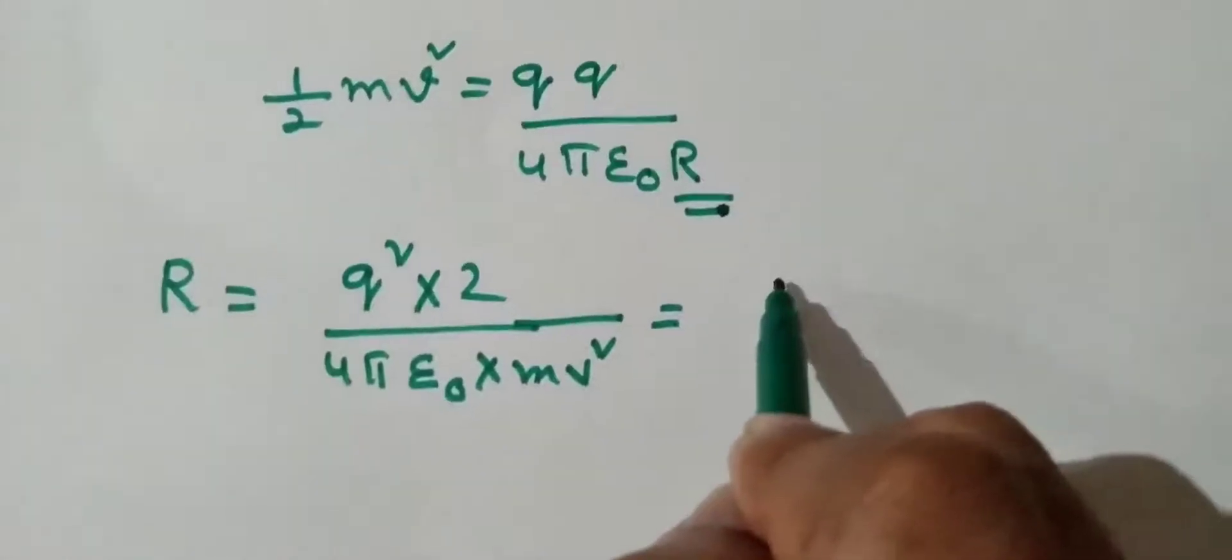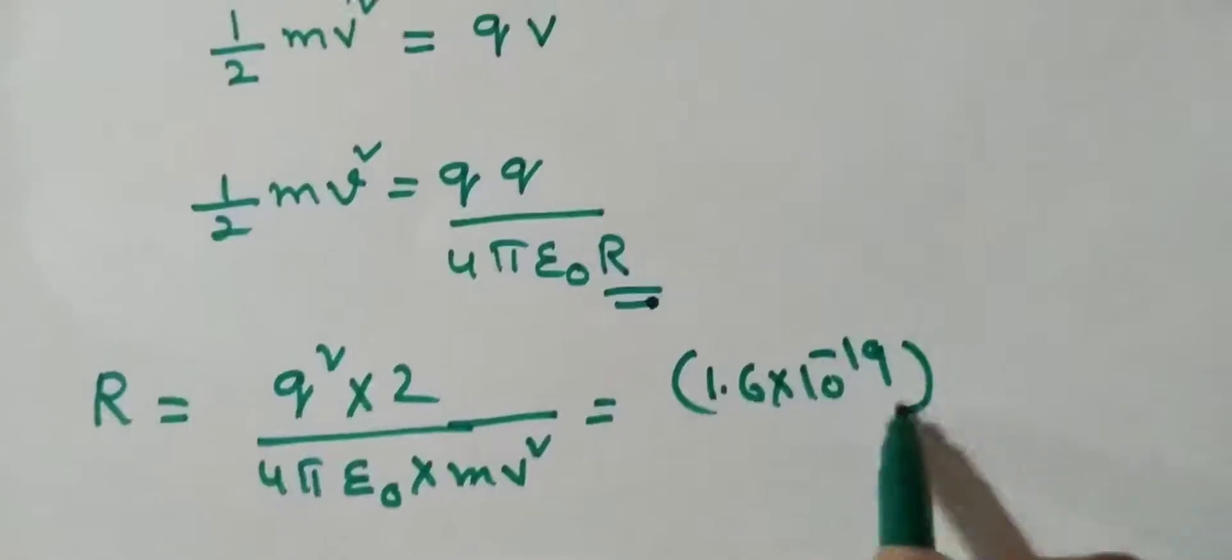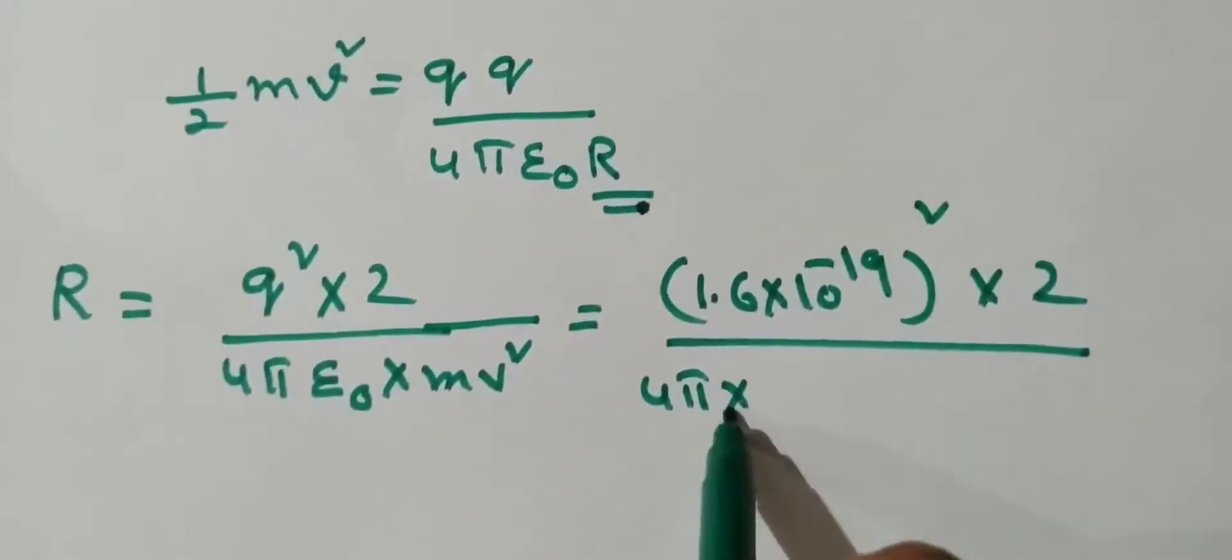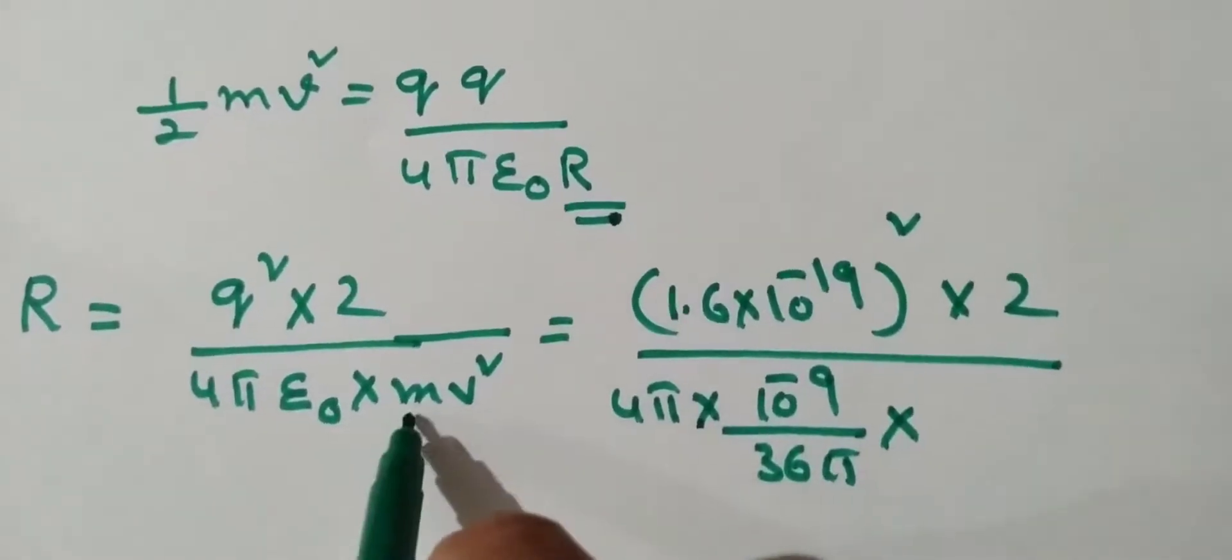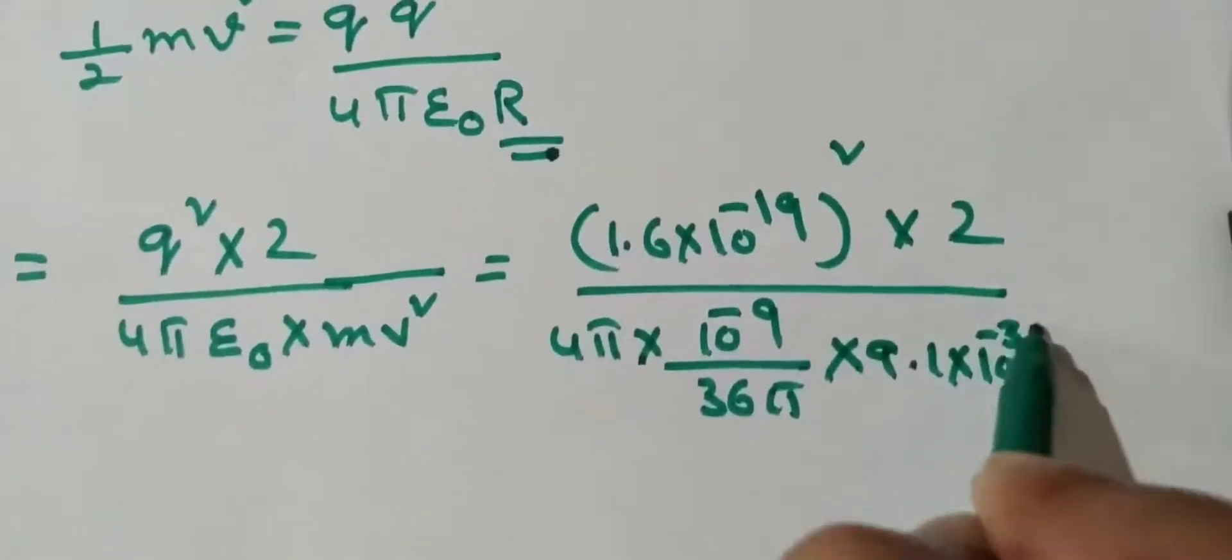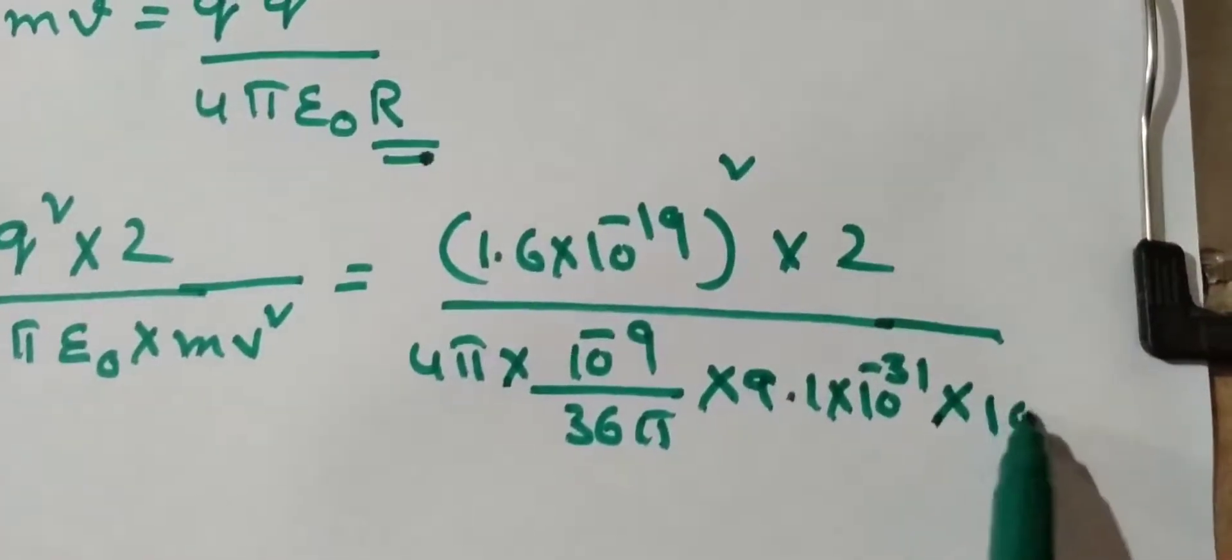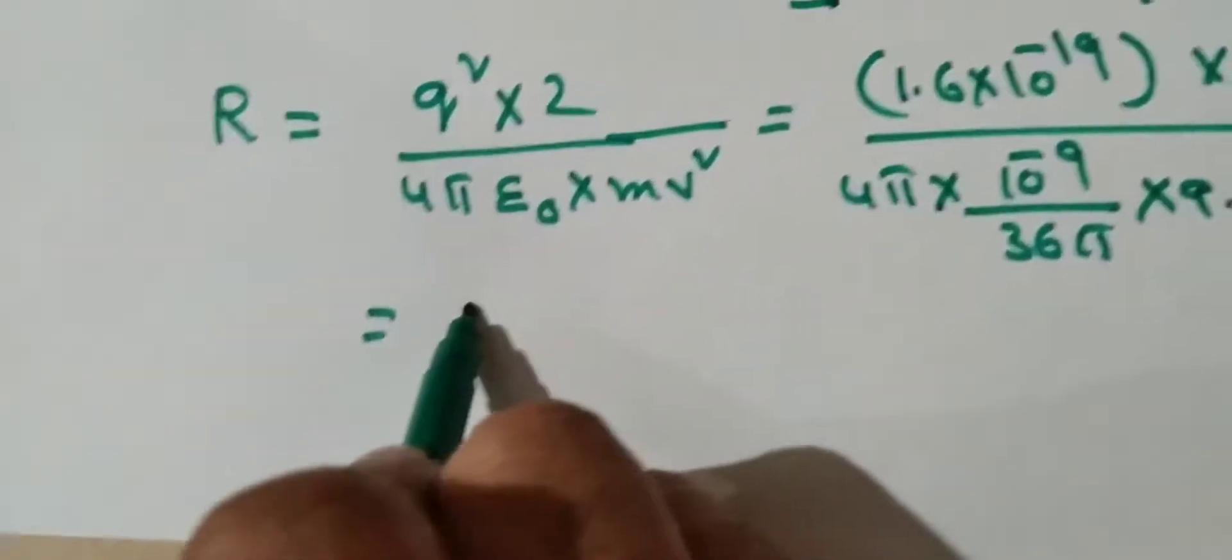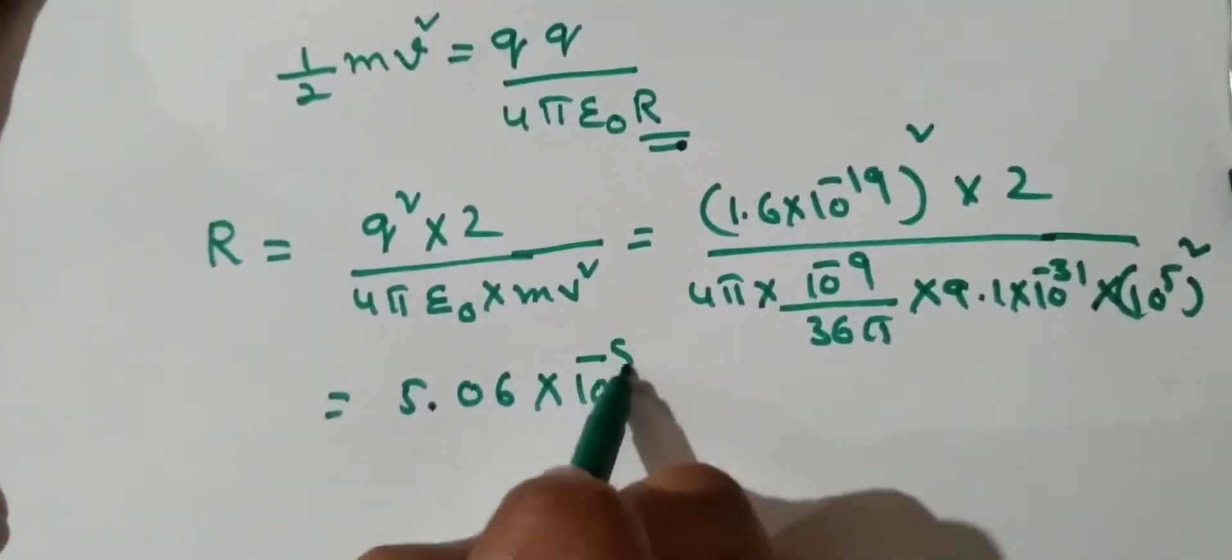Substitute the values: Q is equal to 1.6 into 10 power minus 19 coulombs, electron charge whole square into 2 by 4 pi epsilon naught 10 power minus 9 by 36 pi into m, which is the mass of electron 9.1 into 10 power minus 31, and velocity is equal to 10 power 5 meter per second whole square. By solving, we will get 5.06 into 10 power minus 8 meter.